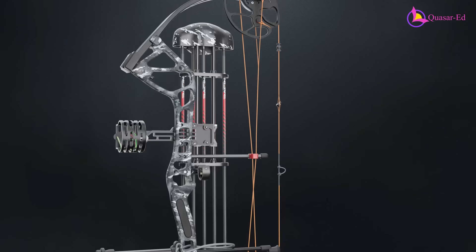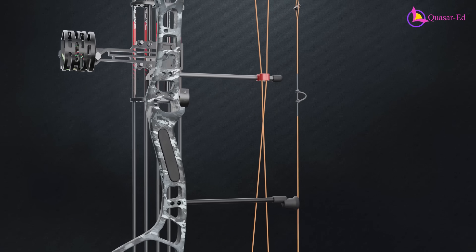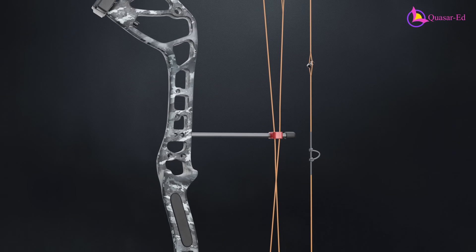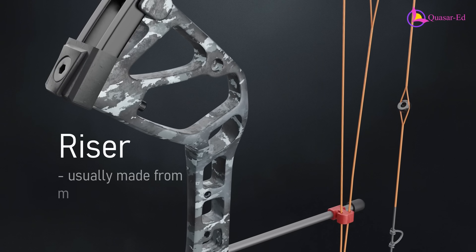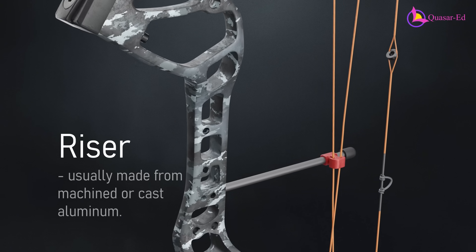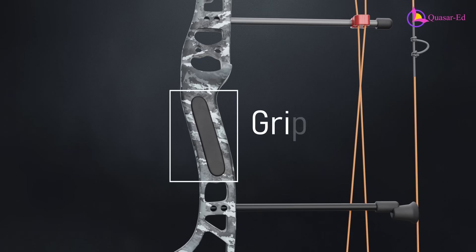Before diving into how let-off works, let's first explore the key components of a compound bow. The central frame of the bow is called the riser, usually made from machined or cast aluminum, providing strength and stability. This part is the grip.